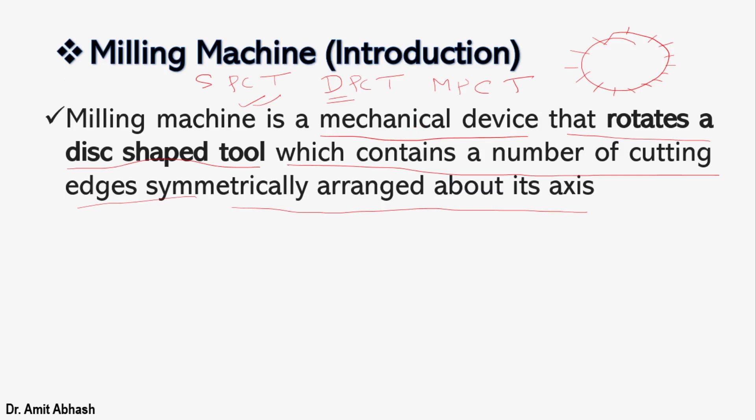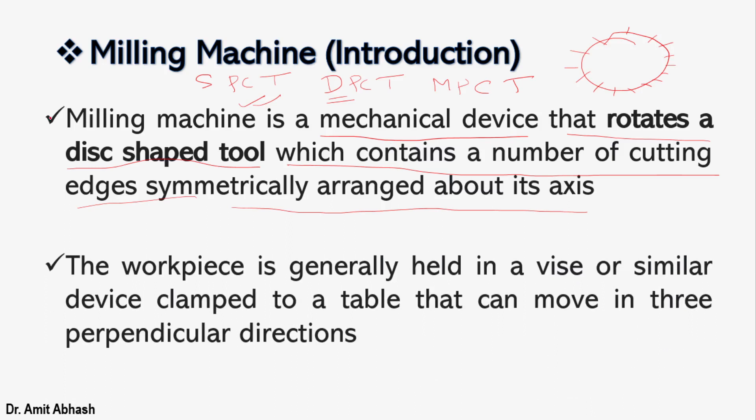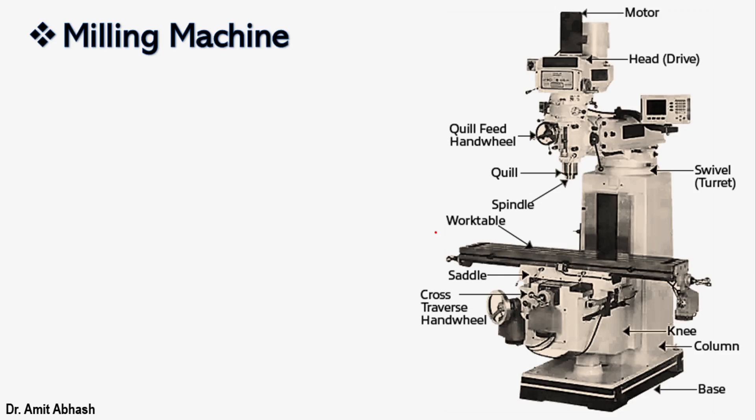Next point: the work piece is generally held in a vise or similar device clamped to a table that can move in three perpendicular directions. This point you should also remember, that the work piece will be held in a vise or similar device clamped to a table. Because that vise will be clamped to a table, the movement of the table will directly affect the movement of that work piece. So these two points are very important. And this is the figure. You should just remember this figure. I am not telling you that you should draw this complex figure, but at least the main components you have to draw.